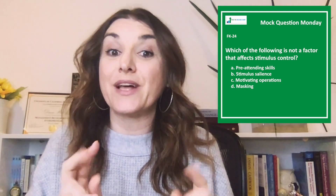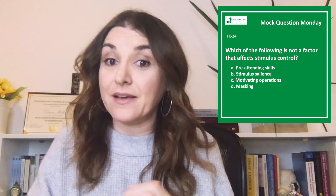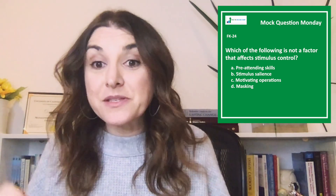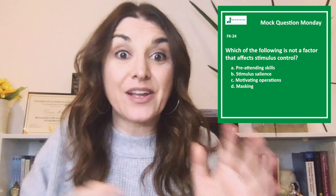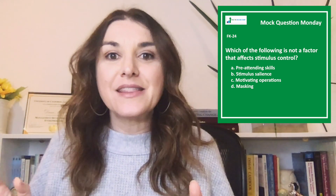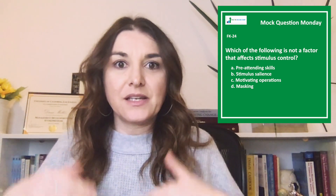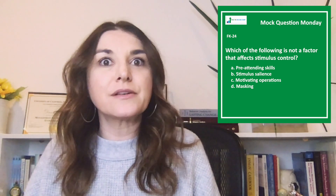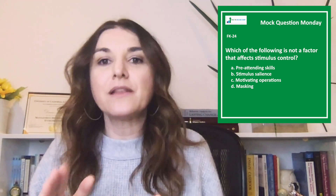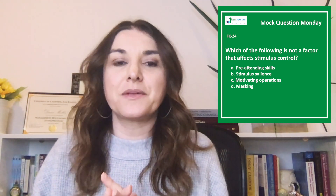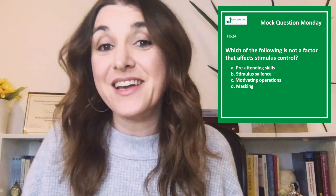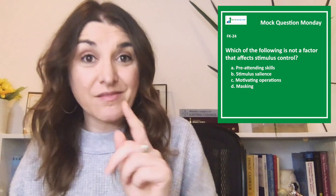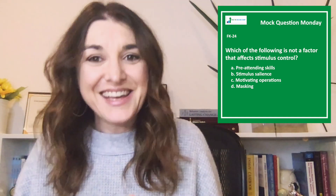Stimulus salience is option B. It describes the prominence of the stimulus in the learning setting or environment that makes things easier to learn. There are two elements that affect stimulus salience. The first is masking, also known as stimulus blocking — that's option D.